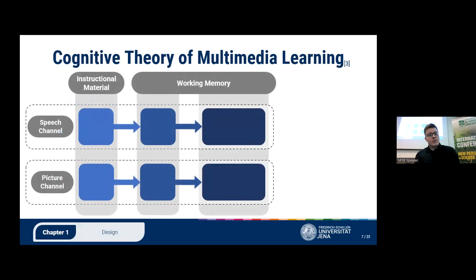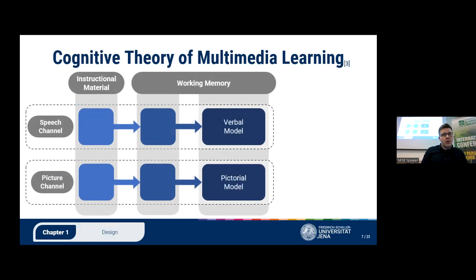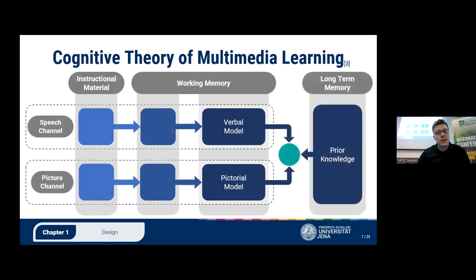The human working memory is divided into two channels: one being the speech channel and the other being the picture channel. Each channel processes its respective form of information, so that a verbal model is formed in the speech channel and a pictorial model is formed in the picture channel. These two models are then used together with prior knowledge from long-term memory to construct a more sophisticated mental model.